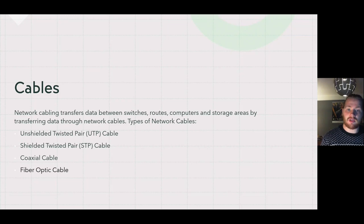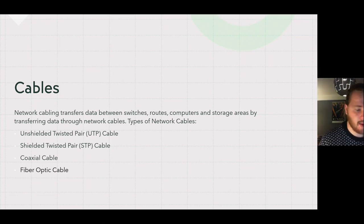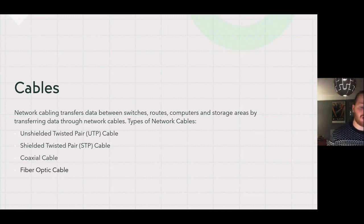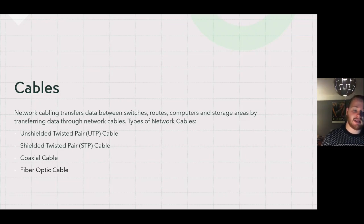Now that we've gone into the network types and models, let's look into some of the components involved. Networks are categorized into two types: one is wired, one is wireless.